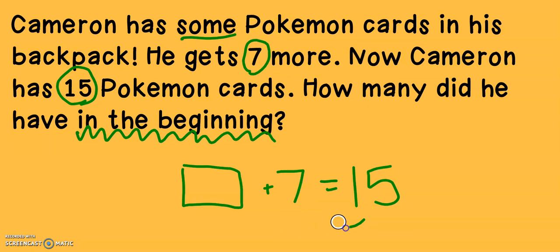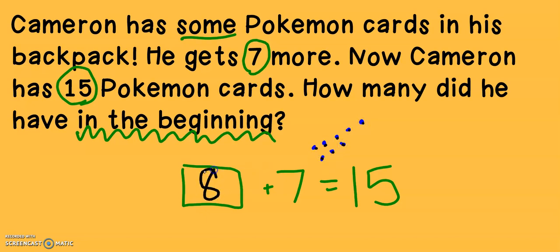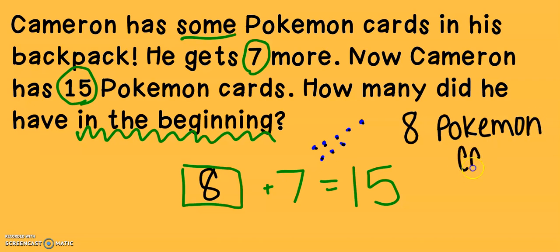I personally prefer to count up because I think it's a little bit easier. Let's start at 7 and count up to 15: 7, 8, 9, 10, 11, 12, 13, 14, 15. Let's count and see how many I went up: 1, 2, 3, 4, 5, 6, 7, 8. That means that Cameron had 8 Pokémon cards in the beginning. We always look for those words to try to help us decide if we should add or subtract.